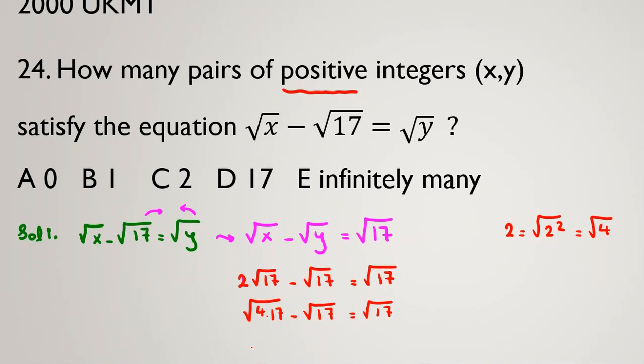In this case, we can say it is equivalent that 2√17, if you take it inside the square root, because 2 equals √2² or √4, I say 4×17 - √17 = √17. For √17, √(4×17) will be 4×17, which is 68, minus 17 equals 17. So here, for example, in this example, I can say x = 68, y = 17.